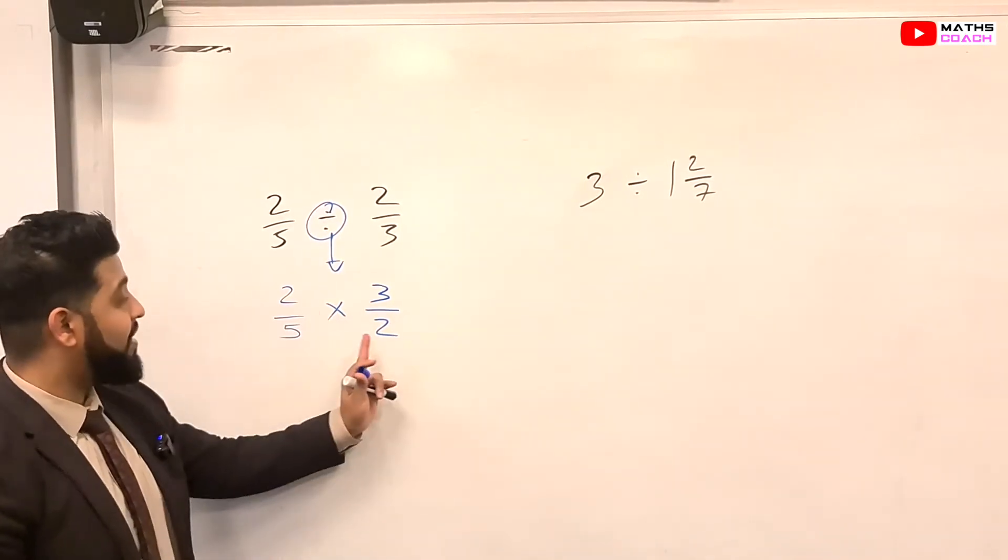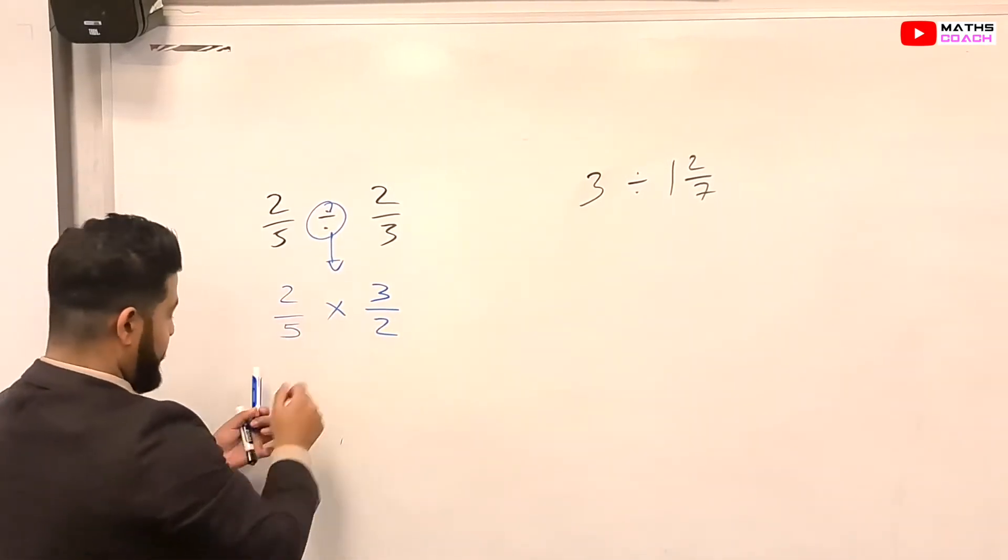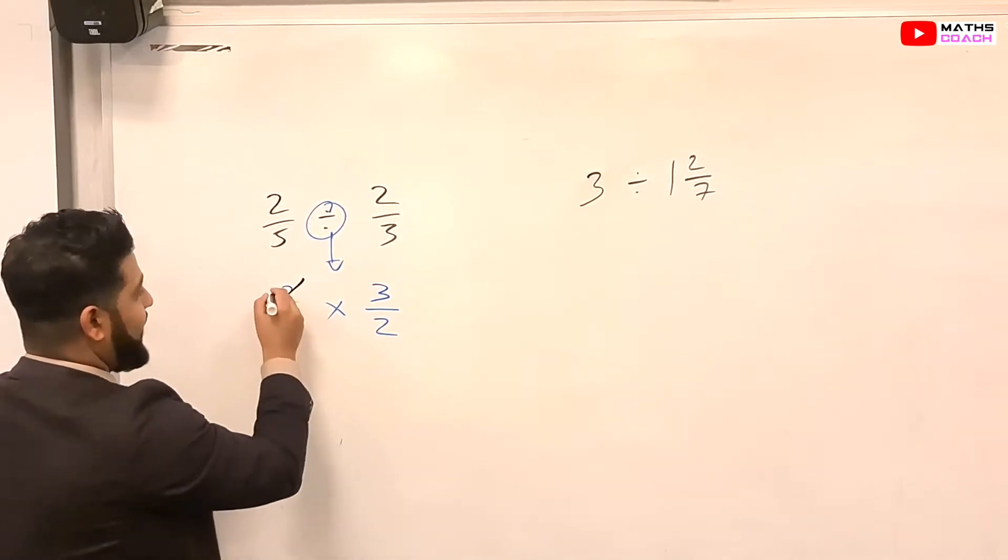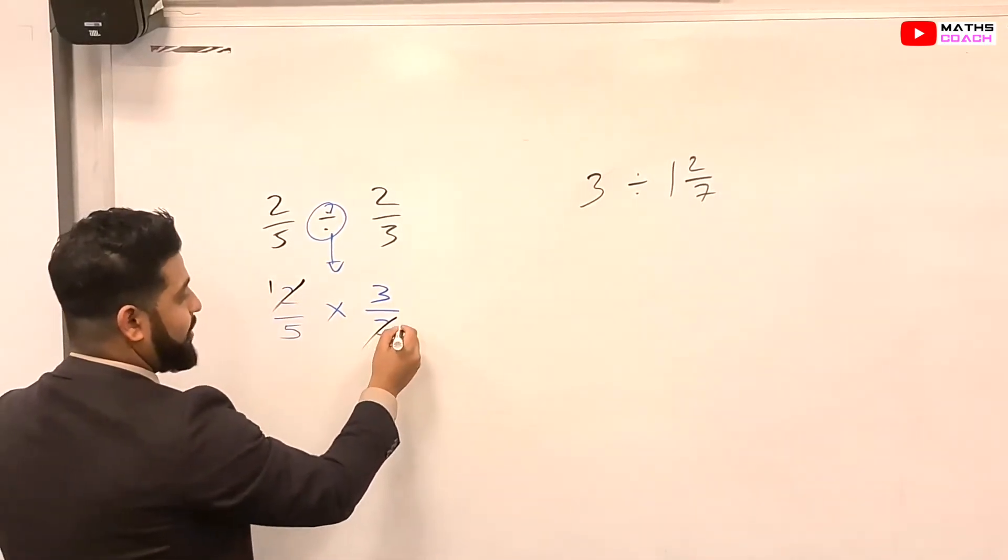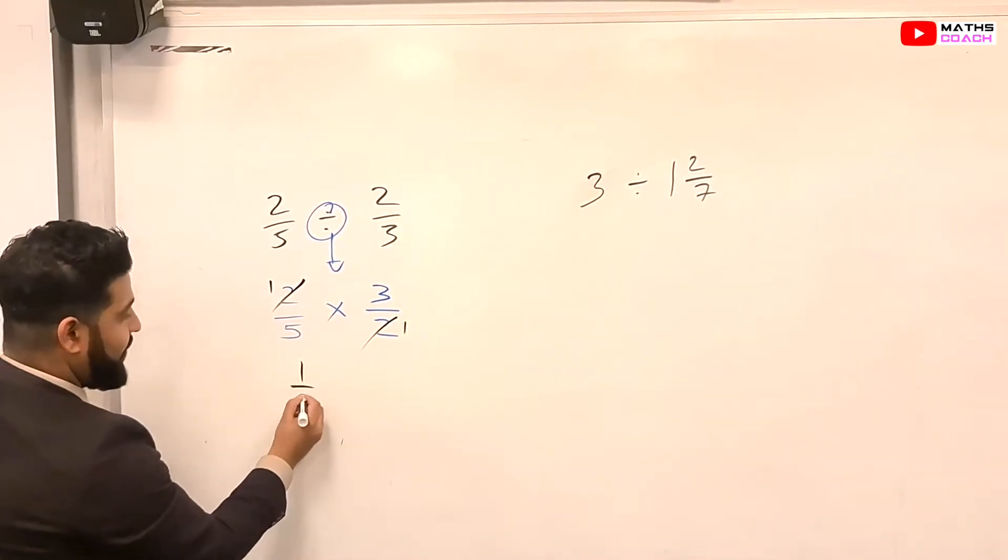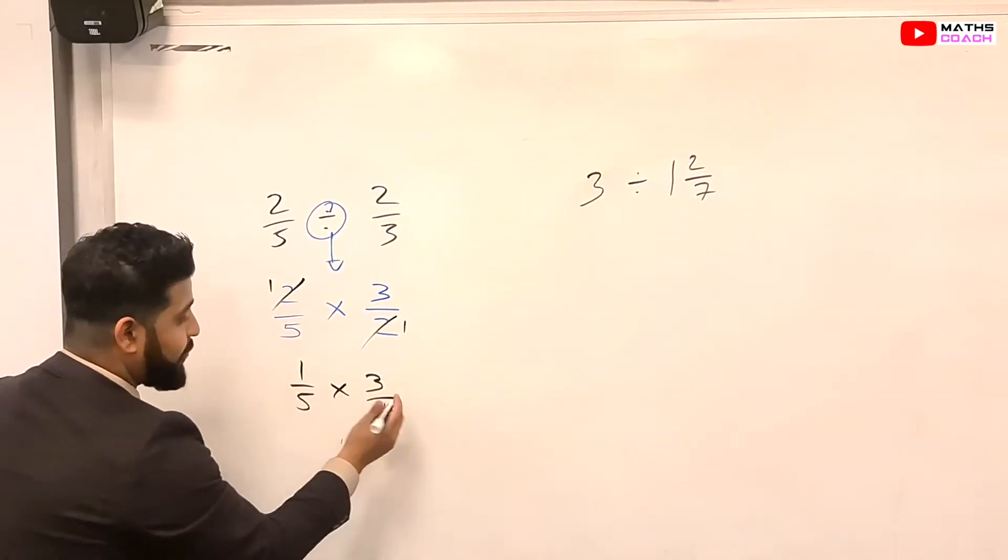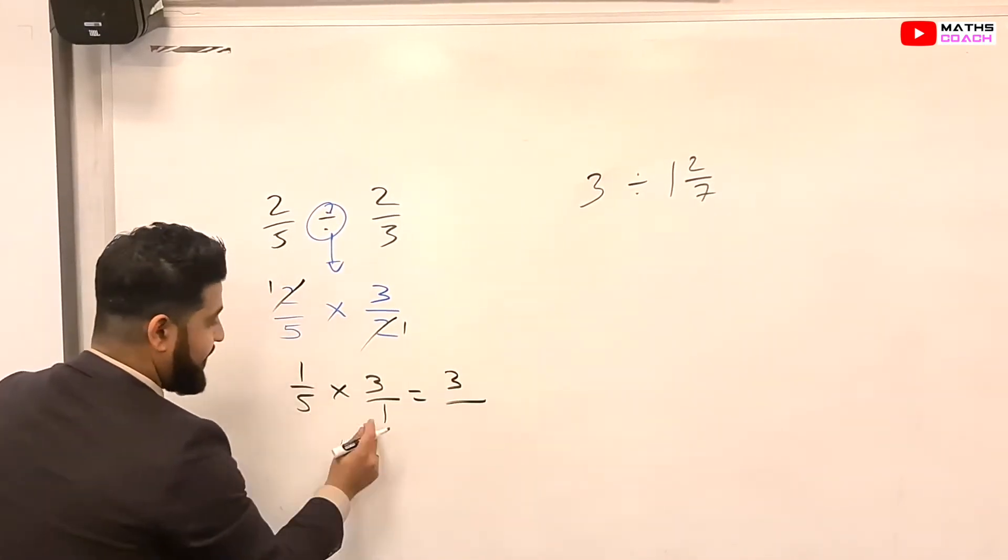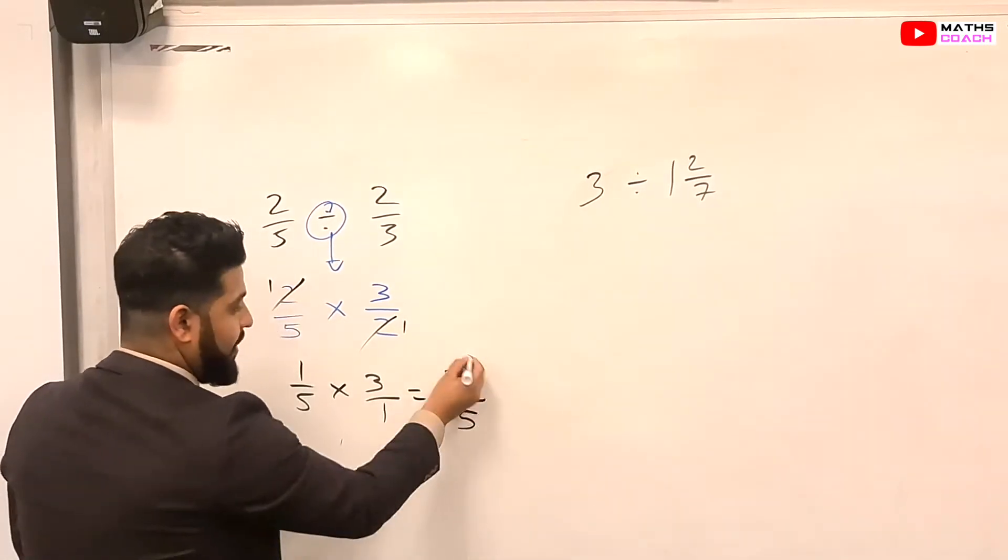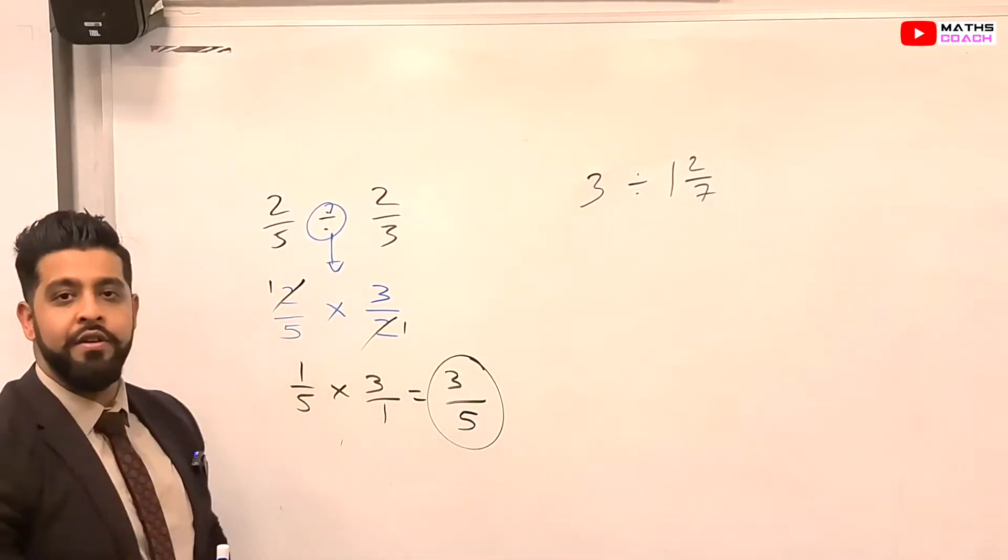And now we just do what we did with multiplying. So we'll multiply across. The 2 and 2 here, you can divide that by 2, that gives you 1. Divide that by 2, that gives you 1. So you're dealing with 1/5 times by 3/1. So 1 times 3 equals 3. 5 times 1 is 5. So the answer is 3/5.